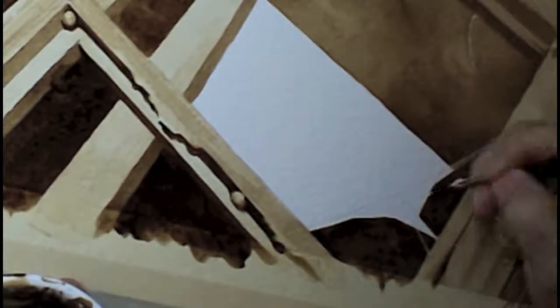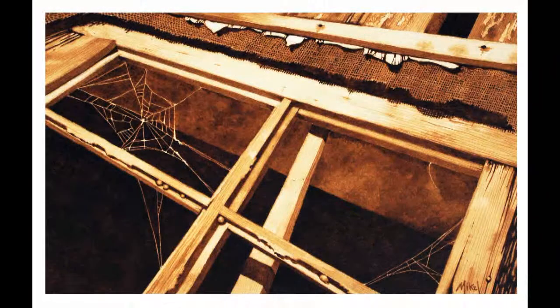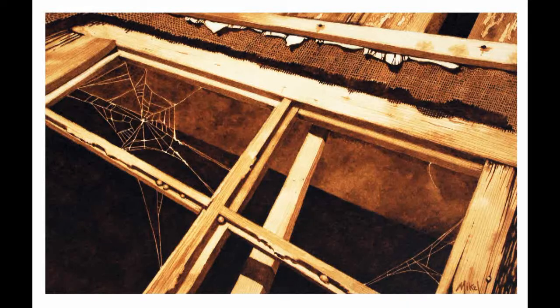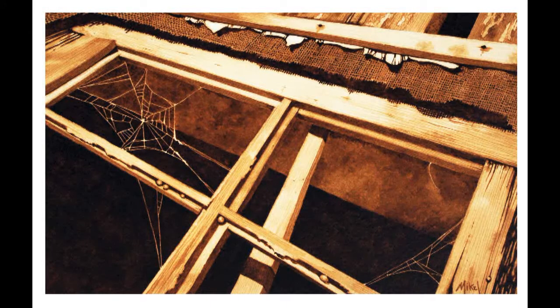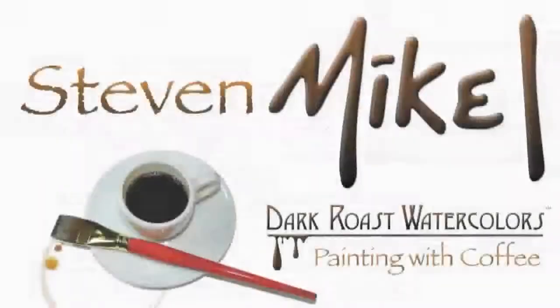So that's a short video on some of the detail on this painting called Old Residences. Here it is finished, painted with Folgers Black Silk Coffee. You can see images of this painting along with others on my website at stephenmichael.com.